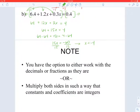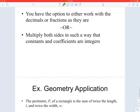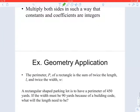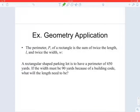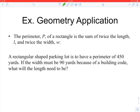So as I said, you have the option of working with the decimals or fractions as they are, or you can multiply both sides so the constants and coefficients turn into integers — that's my preference. Now let's look at a geometry word problem.